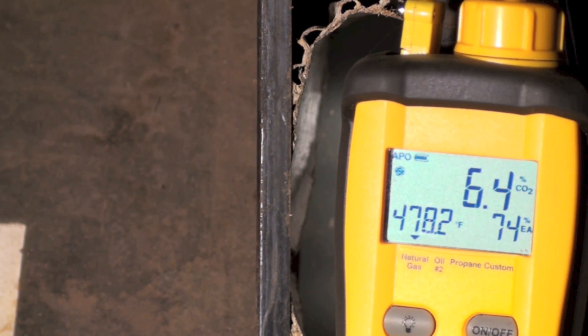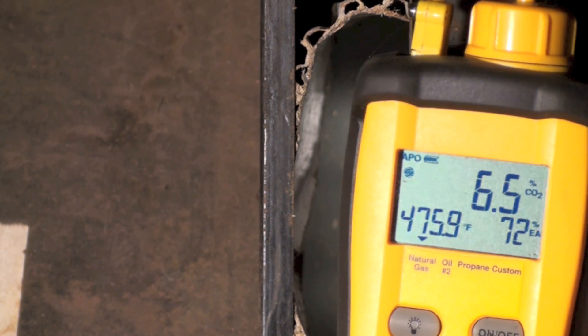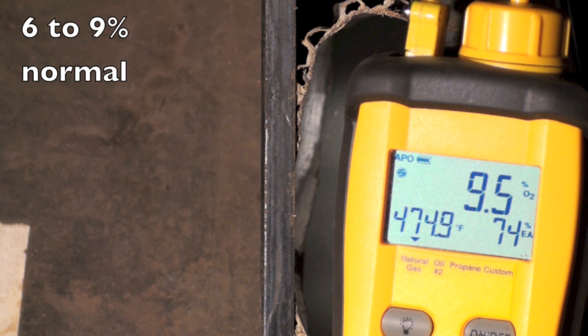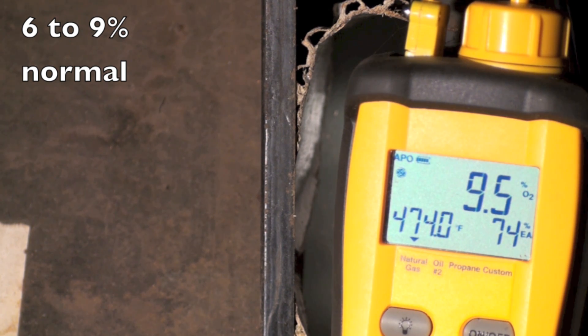Okay, again we're checking the burner that has the wide open primary air. Okay, CO2 - 6.5, O2 - 9.4 or 9.5. Okay, the stack temperature - wow, stack temperature is way down, isn't it? 474.